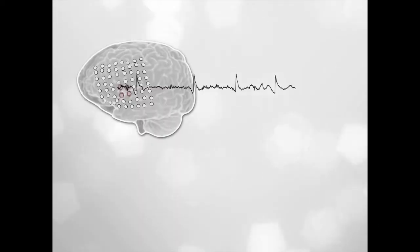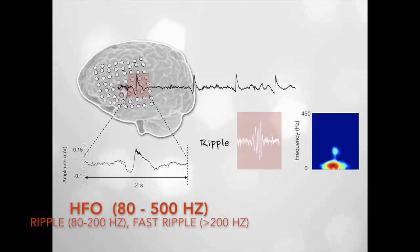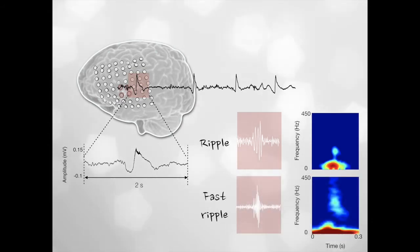HFOs have been proposed as promising neurobiological markers for the identification of seizure onset zone, but they could also originate from functional brain structures. The discrimination of pathological and normal HFO is very challenging since frequency alone is not sufficient to distinguish between epileptic HFO and functional ones.